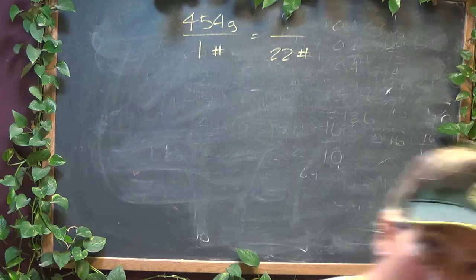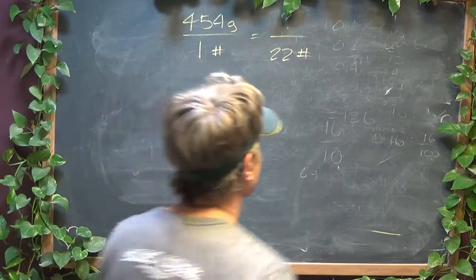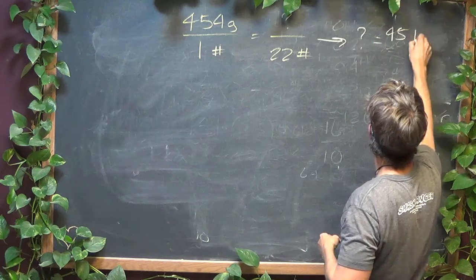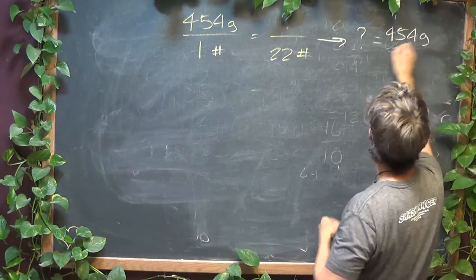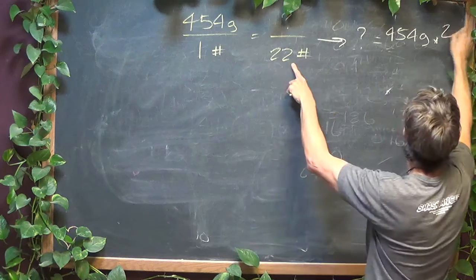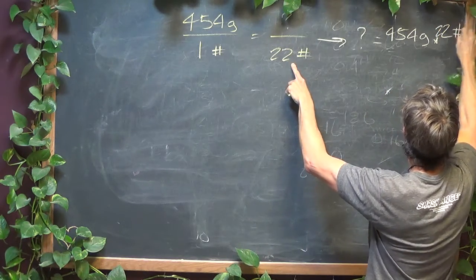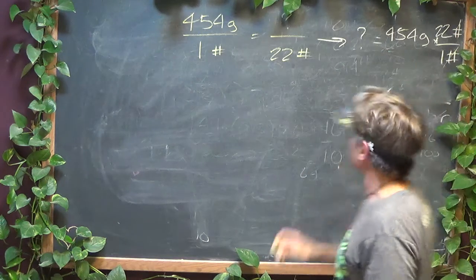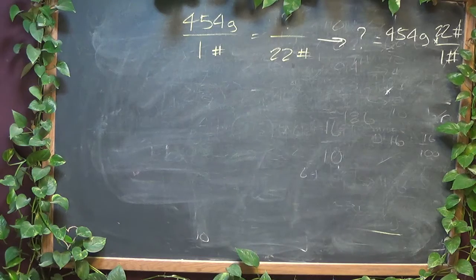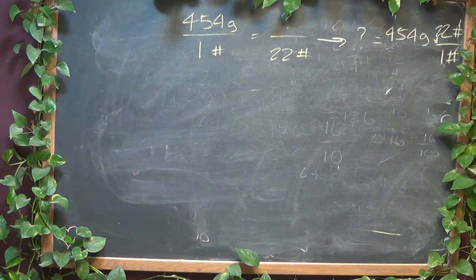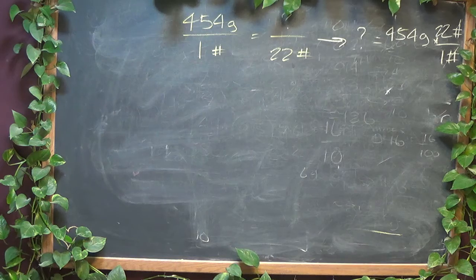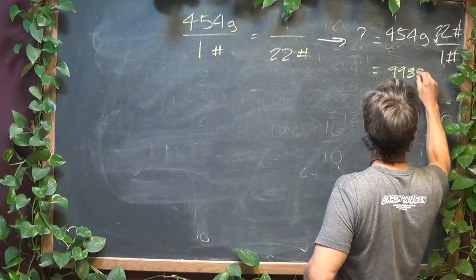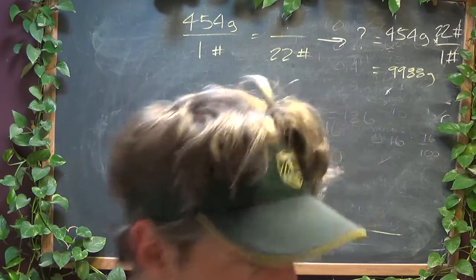And again, we can get the solution first using our ABCs. And again, the beautiful thing about the units, you're left with 454 times 22. And I get a lot, almost 10,000 grams. There you go.